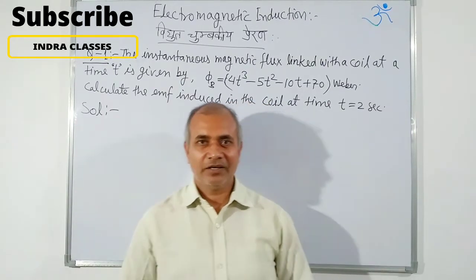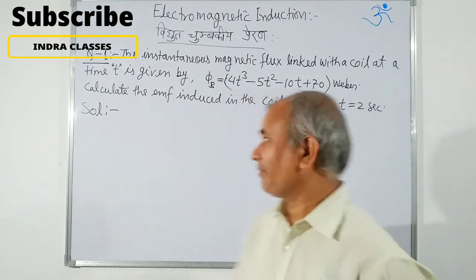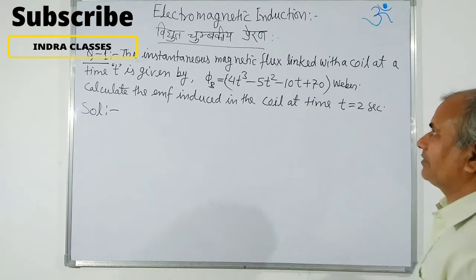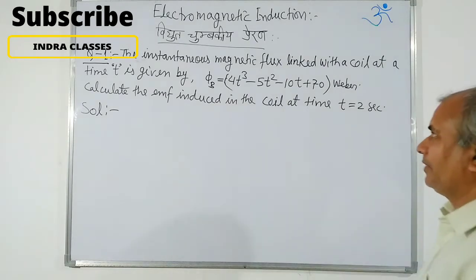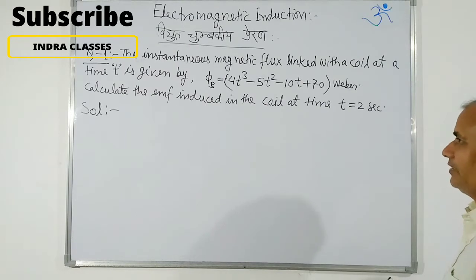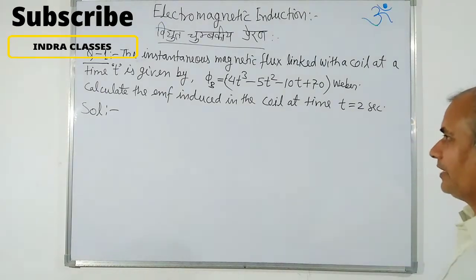You have a question on the screen. The instantaneous magnetic flux linked with a coil at time t is given by φ = 4t³ − 5t² − 10t + 7 Weber. Calculate the EMF induced in the coil at time t = 2 seconds.